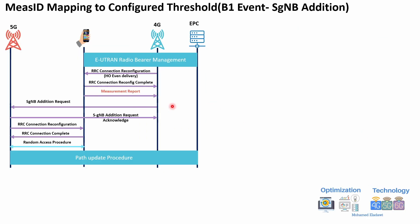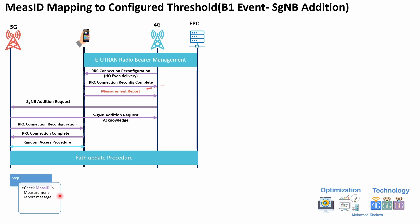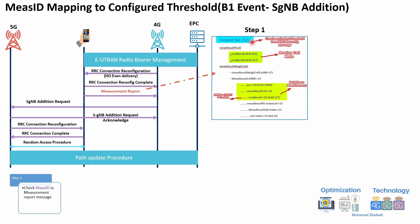This next case is for a B1 event, just to show the logic of mapping the measurement report to the equivalent event. The figure on the left shows the signaling flow for a secondary cell group (SCG) addition. Initially the gNodeB delivers the RRC configuration message covering the majority of handover events. Once the UE reports a measurement report, we need to determine which event it maps to. The first step is the same: check the measurement ID within the measurement report.